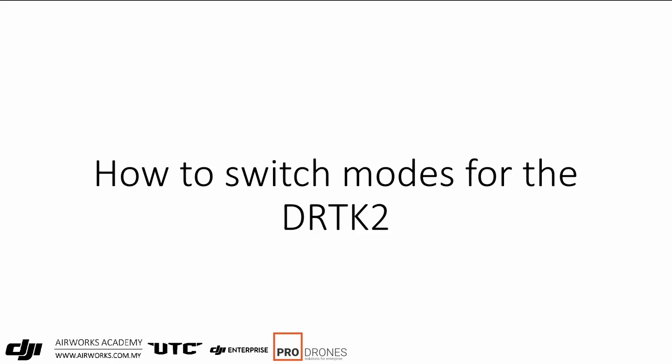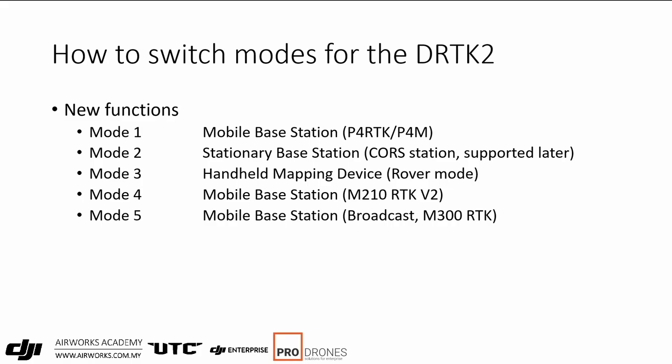Now let's look at how to switch modes on the DRTK2. Originally it came with only modes 1, 2, and 3; modes 4 and 5 were added later. DJI has now integrated all DRTK2 models and functions into one standardized firmware. Previously, a Matrix-only version of the DRTK2 couldn't be updated or linked using the P4R. Now with unified firmware, it works with the P4R, P4M, M210 RTK, M300, and iGras models — so you can use this one base station across a lot of different work.